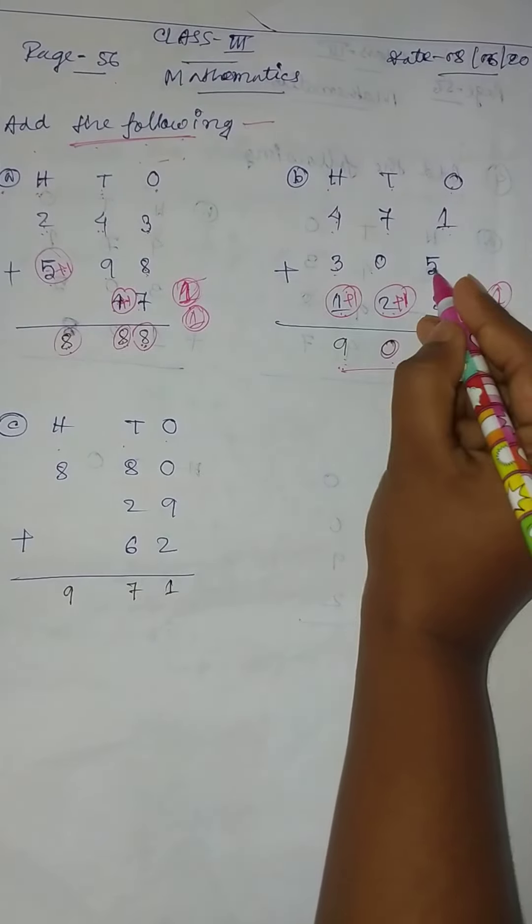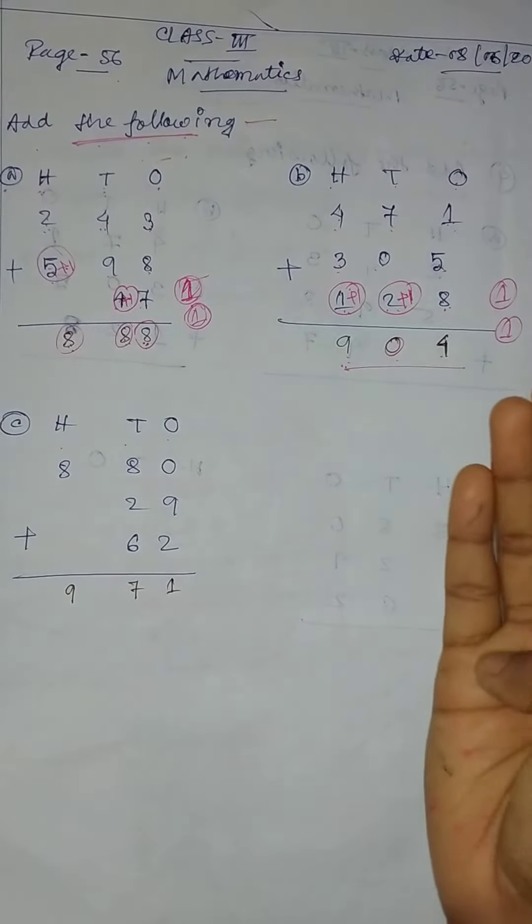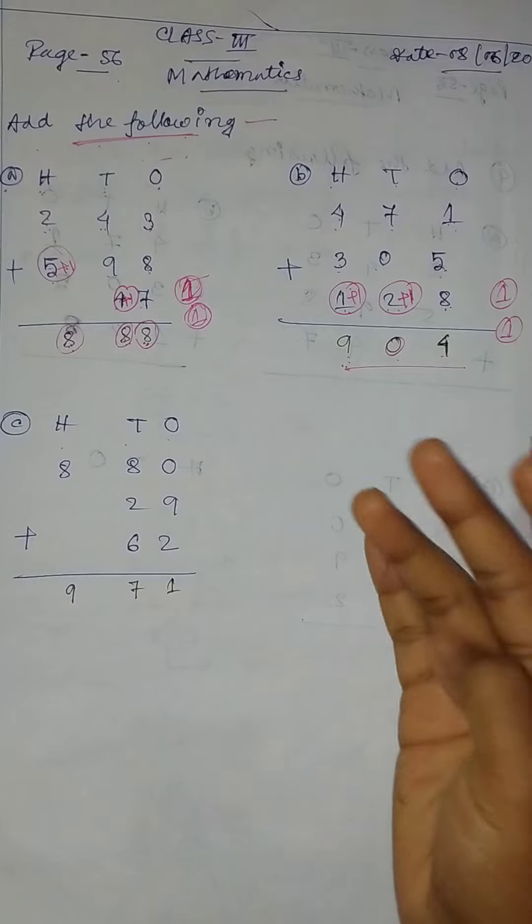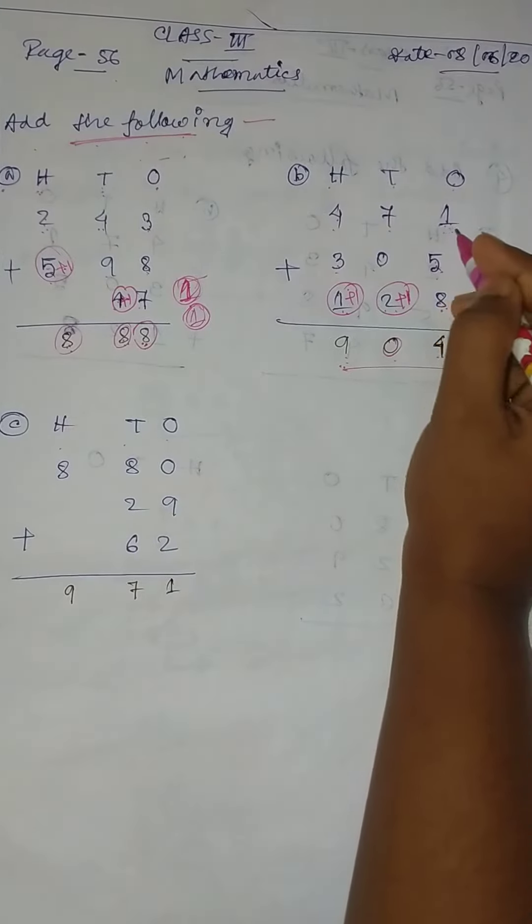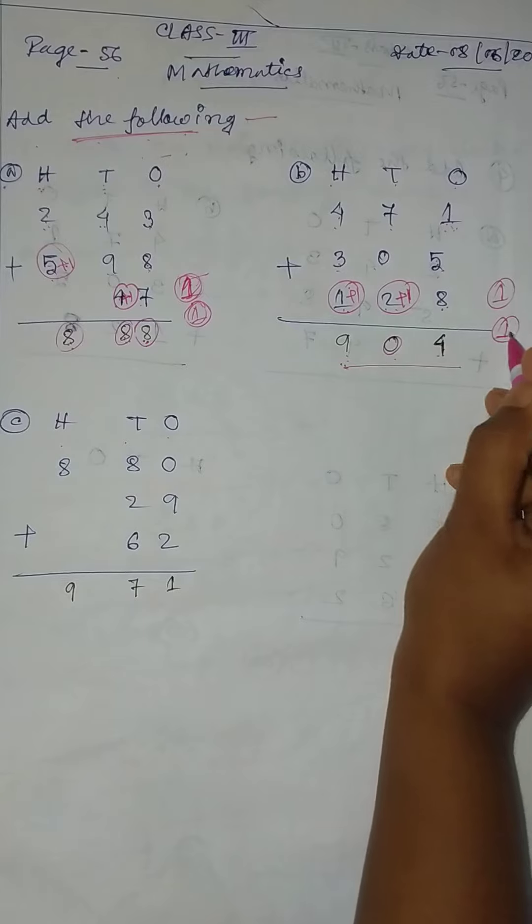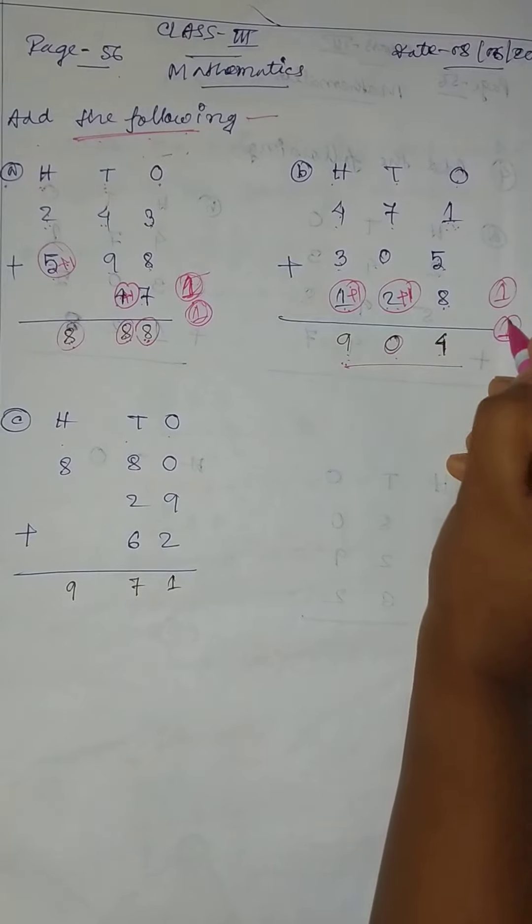So firstly, 8 plus 3: 8, 9, 10, 11, 12, 13. 13 plus 1 equal to 14. 14, write 4 and 1 carry.